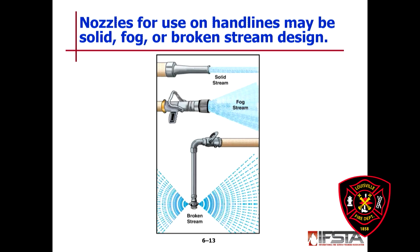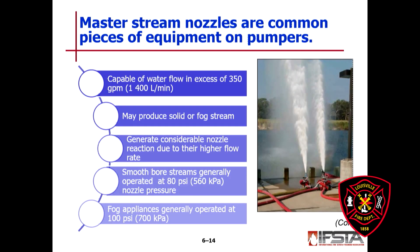If you go into your cabinets or lockers in your firehouses you might find the cellar pipe nozzles we used to carry — we had a 100 GPM and a 400 GPM. Master stream nozzles are a common piece of equipment on pumpers, capable of flowing water in excess of 350 gallons per minute. On the Louisville Fire Department we're talking about our blitz fire and our monitors, and they may produce solid and/or fog stream.